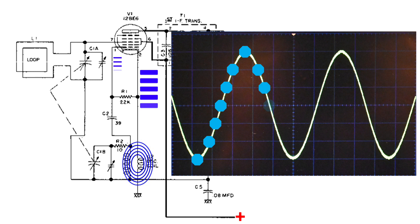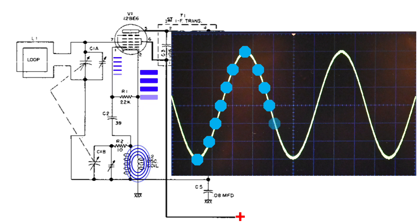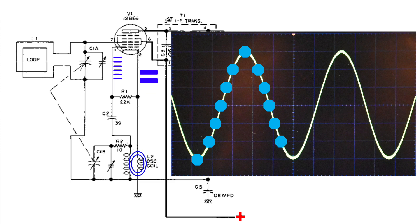And when that happens, that's making the control grid more negative. And the cathode is now releasing less electrons to the plate.